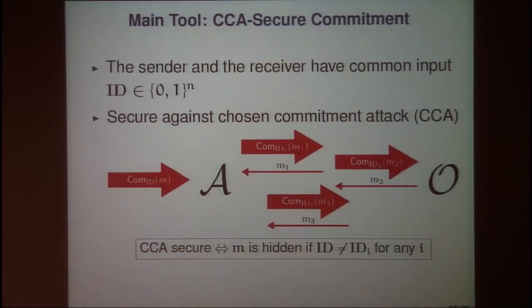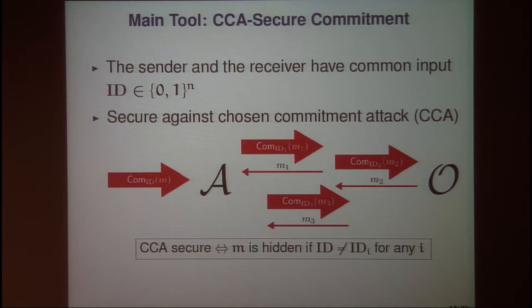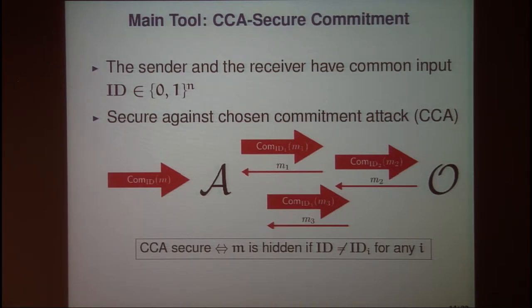A CCS-secure commitment scheme is defined as follows. Consider a commitment scheme in which both the sender and receiver have a common input ID. Consider an attack called a chosen commitment attack, in which the adversary can query an oracle called the committed value oracle. In each query, the adversary generates a commitment, and the oracle extracts the committed value by brute force and returns it. At the same time, the adversary receives a challenge commitment from an external sender and tries to break its hiding property. A commitment scheme is CCS-secure if the committed value M of the challenge commitment is hidden from the adversary, as long as the ID of the challenge differs from the IDs used in queries.